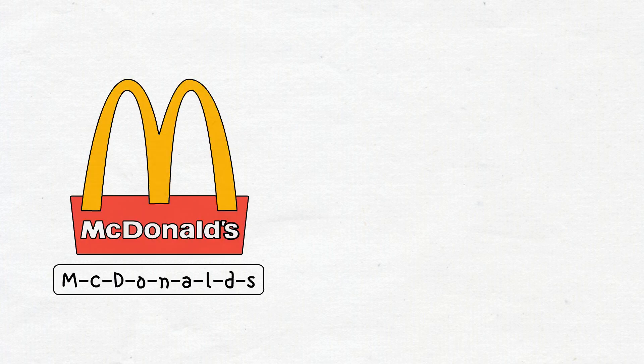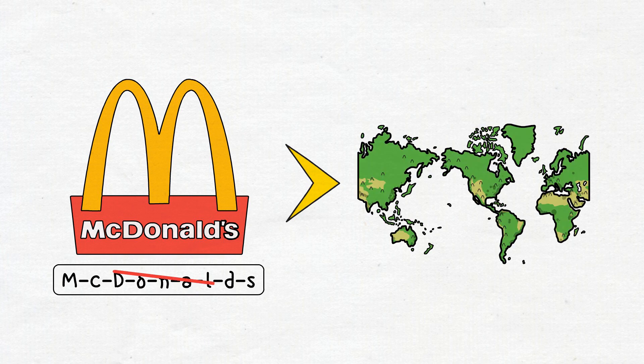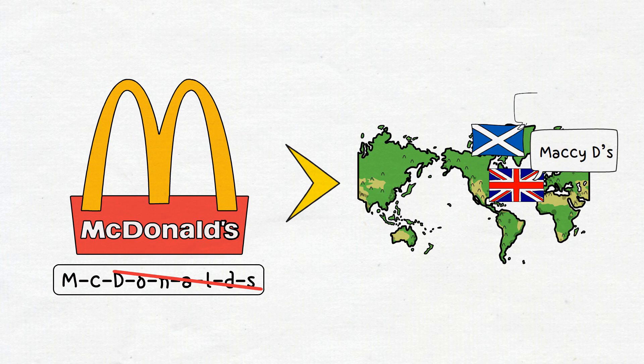As an example, let's take McDonald's. Definitely not a long word to say. However, in different countries, people use different shortenings to refer to it. As an example, in the UK, people call it Mac-EDs. In Scotland, it's called Mac-Ds, while the Japanese call it Maku.